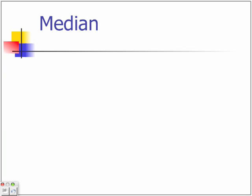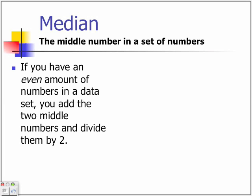And then the next part is the median, which is the middle number in the set of numbers. If you have an even amount of numbers in the data set, you add the 2 middle numbers and divide them by 2. So for example, there's 4 numbers here.